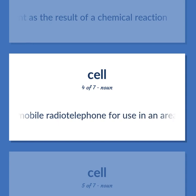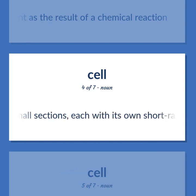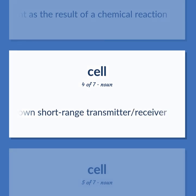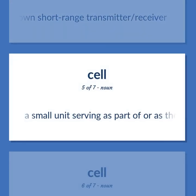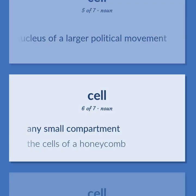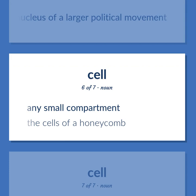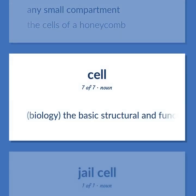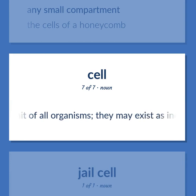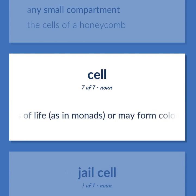A handheld mobile radio telephone for use in an area divided into small sections, each with its own short-range transmitter and receiver. A small unit serving as part of or as the nucleus of a larger political movement. Any small compartment — the cells of a honeycomb. Biology: the basic structural and functional unit of all organisms. They may exist as independent units of life, as in monads, or may form colonies or tissues as in higher plants and animals.